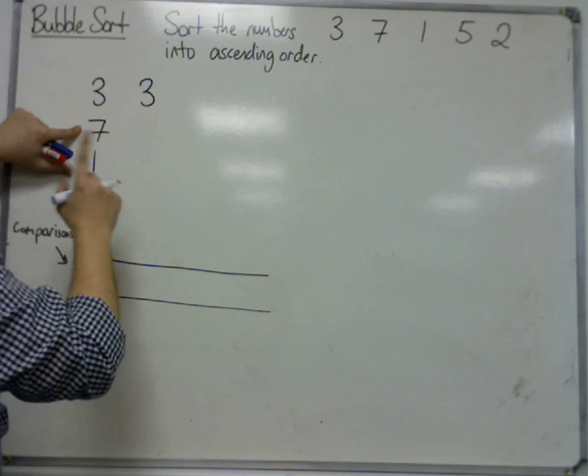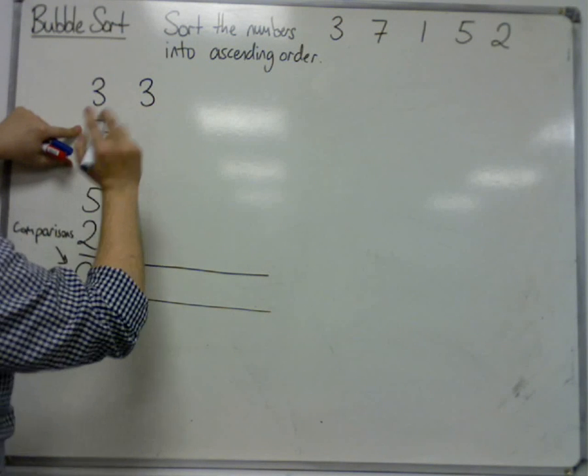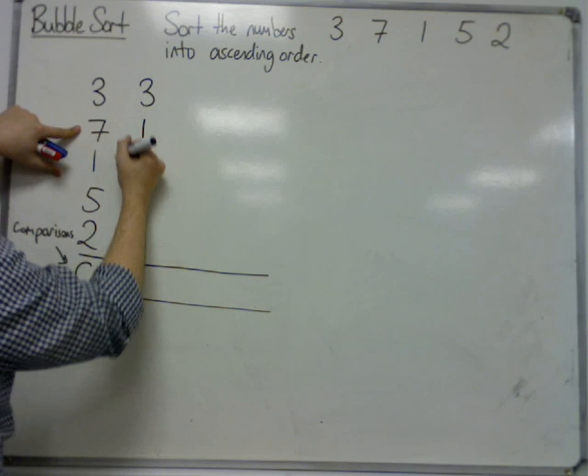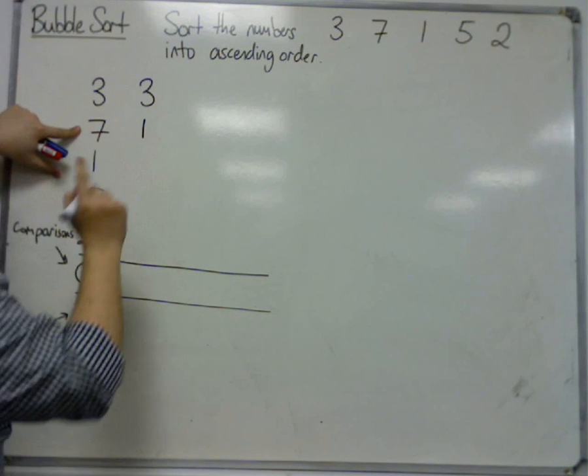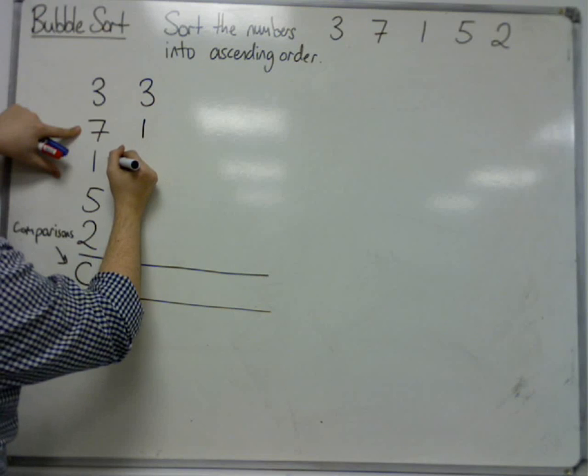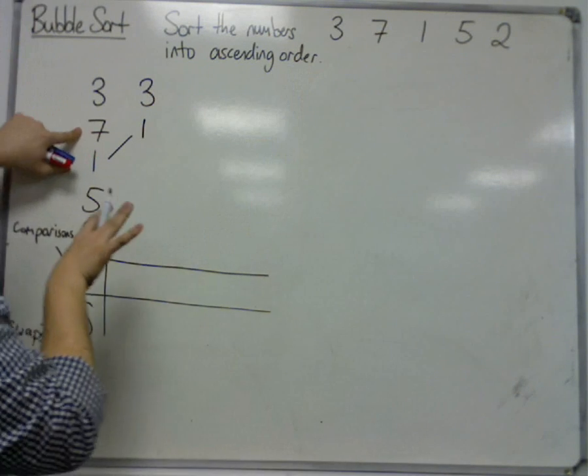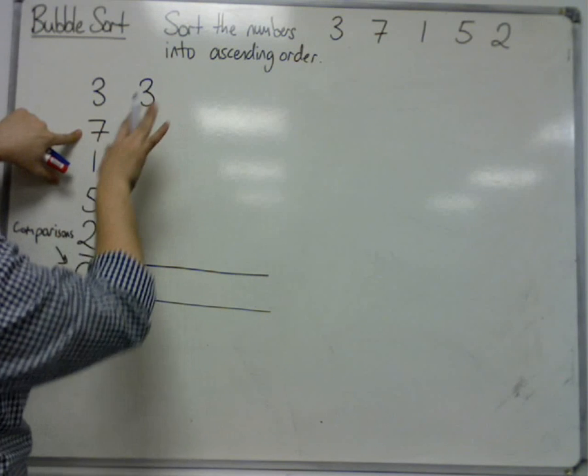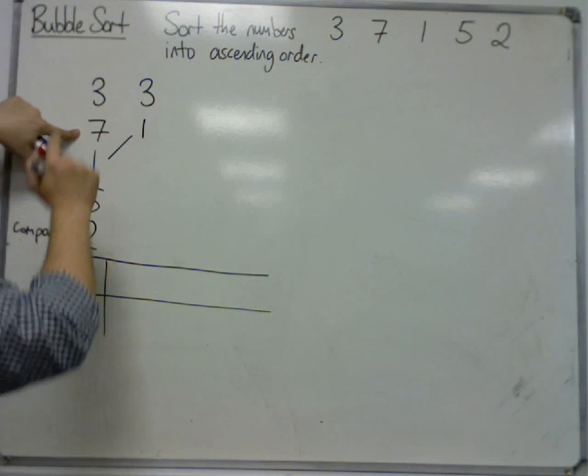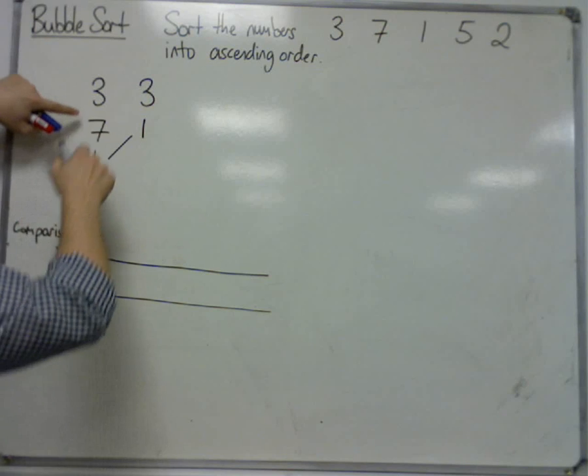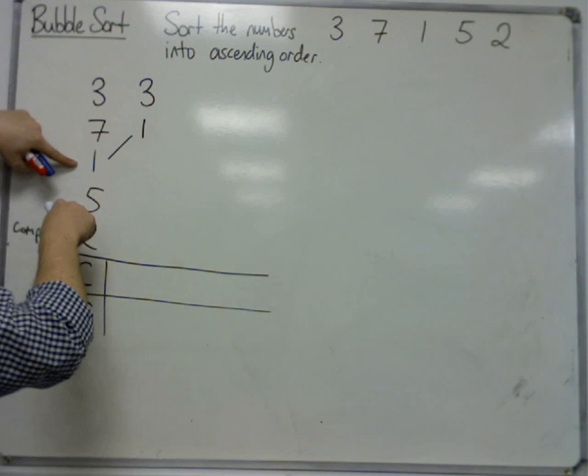Now, we know that 1 is smaller than 7, so 1 must be swapped with 7. And in order to record the swap, I'm going to put in upper diagonal lines to show that 1 has been swapped and moved. We're now going to compare 7 and 5 because you can imagine that the 7 has been swapped around. We're now looking at 7 and 5.